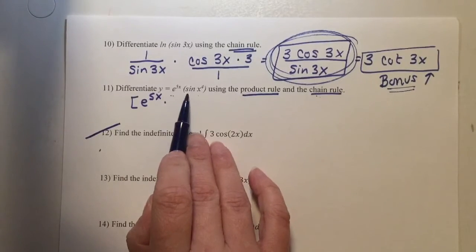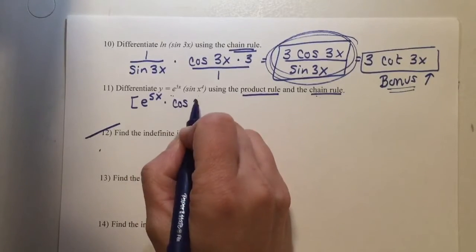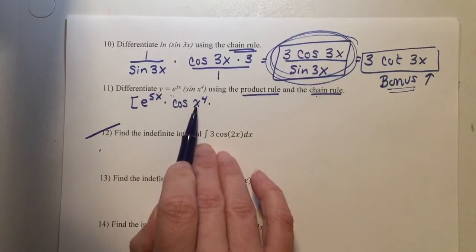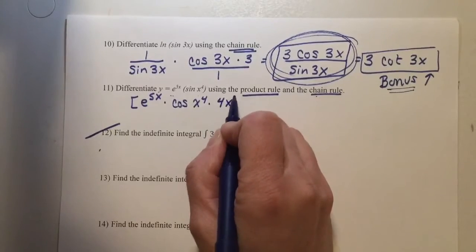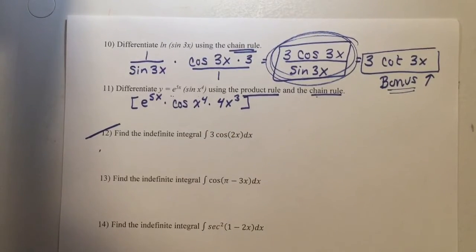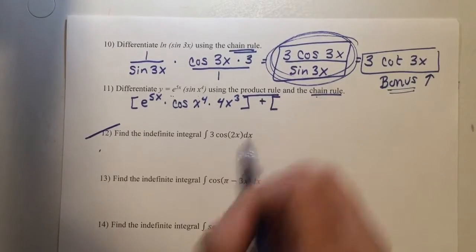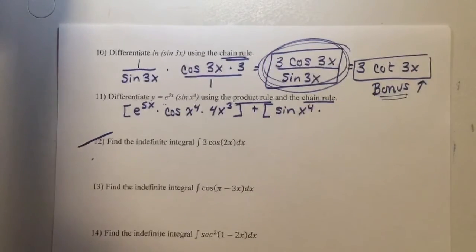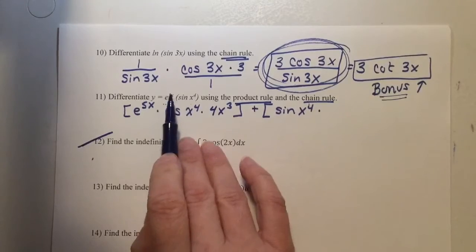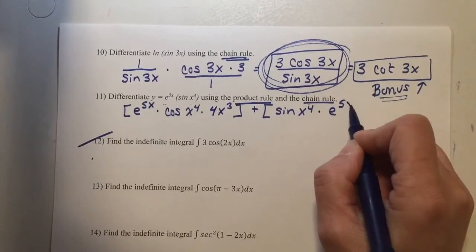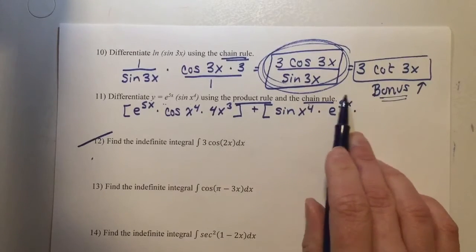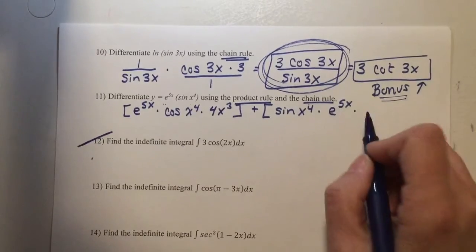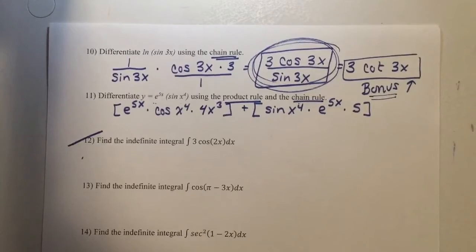You keep f(x) the same — e to the 5x — times the derivative of g(x). The derivative of a sine is a cosine; you keep x to the power of 4 the same. Because this is more than just a single x, find the derivative of x to the power of 4, which is 4x cubed, and multiply that as well. That's your first piece. Plus, you keep g(x) — the sine of x to the power of 4 — times the derivative of f(x). This is an e term, so you keep the term the same, e to the 5x. Because this is more than just an x, find the derivative of the exponent: the derivative of 5x is 5.